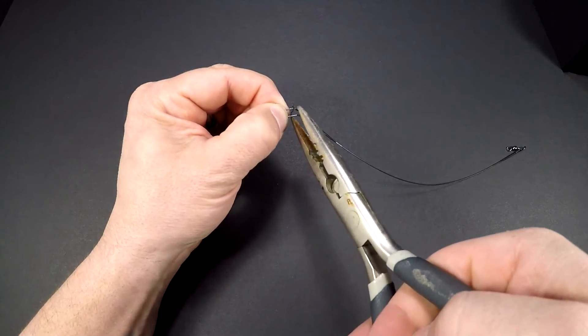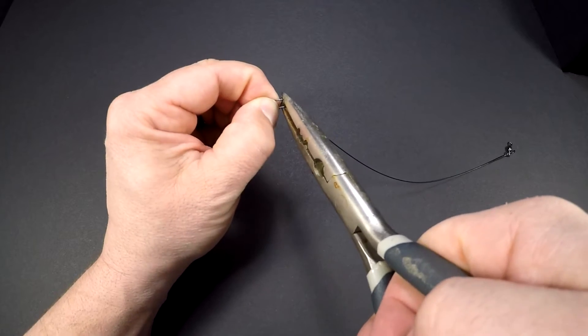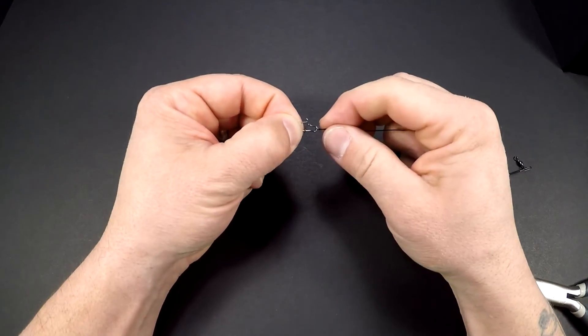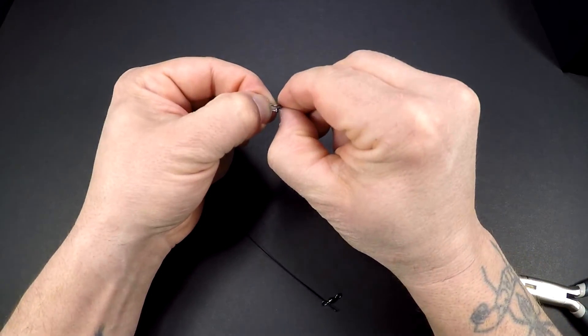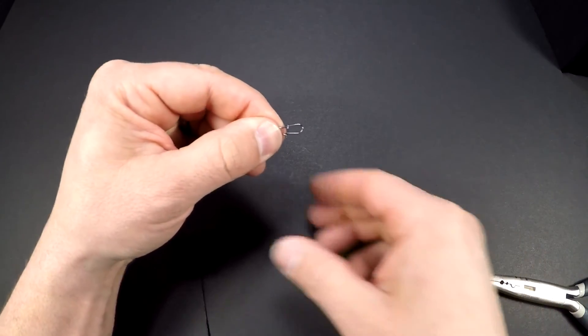Take your pliers, close the fast lock center piece of the fast lock snap like that, close the outer piece of the fast lock snap like that, and there you have it.